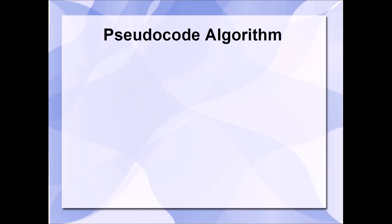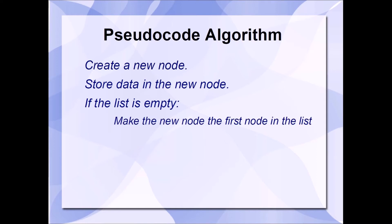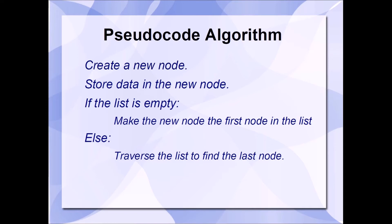Let's examine the algorithm using pseudocode. First, we'll need to create a new node. Then we'll need to store data within the new node. And then we'll have to determine if the list is empty or not. If the list is empty, then we'll need to make the new node the first node in the list. Otherwise, we'll need to traverse the list to find the last node. Once we've identified the last node, then we can add our new node to the end of the list.